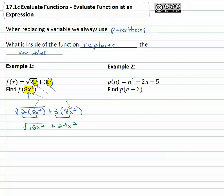We can simplify the square root because the square root of 16 is 4 and the square root of x squared is just x so we have 4x plus 24x squared. Can't do any more simplifying. That's our final solution putting the expression inside the function.